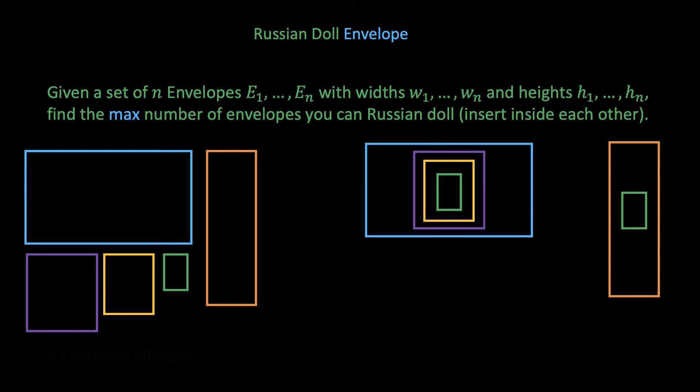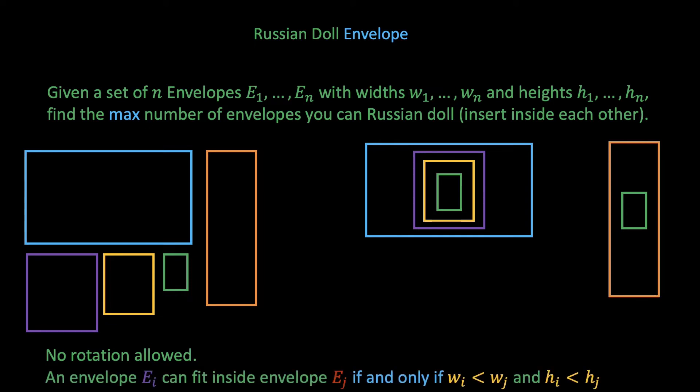Note that we're assuming that we cannot rotate or even fold an envelope. More formally, an envelope ei fits inside envelope ej if and only if wi is less than wj and hi is less than hj, or both the width and the height of ei is strictly smaller than ej.